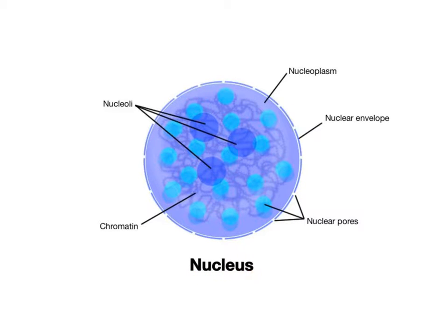The nucleus is surrounded by a double membrane structure called the nuclear envelope. The envelope is embedded with protein complexes called nuclear pores, which are openings that regulate the chemical traffic between the cytoplasm and the fluid within the nucleus, the nucleoplasm.